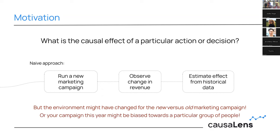Another issue is that a campaign might have been applied to a different group of people. For instance, if this year's campaign targets people aged 20–30 but last year's targeted people aged 30–40, that difference will clearly have an impact on the effect we estimate.